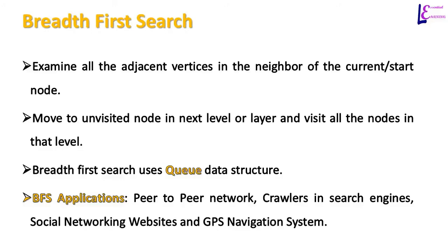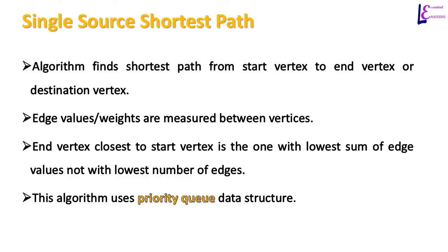In breadth-first search, all adjacent vertices in the neighborhood of the current node are examined first. Nodes in the first level are visited first, and when those are done, we move to unvisited nodes in the next level and visit all nodes in that level. Breadth-first search uses a queue data structure. Applications include finding all neighboring nodes in a peer-to-peer network and finding neighboring locations in GPS navigation systems. Crawlers and social networking sites use both depth-first search and breadth-first search. Breadth-first search can also be used to find the shortest path — that is, the path with the least number of edges or nodes between two nodes.